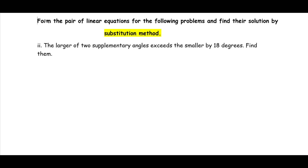We need to form a pair of linear equations and find their solution by substitution method. The question is: the larger of two supplementary angles exceeds the smaller by 18 degrees. We need to find the two angles. What do we mean by supplementary angles? If the sum of two angles is 180 degrees, we call them supplementary angles.